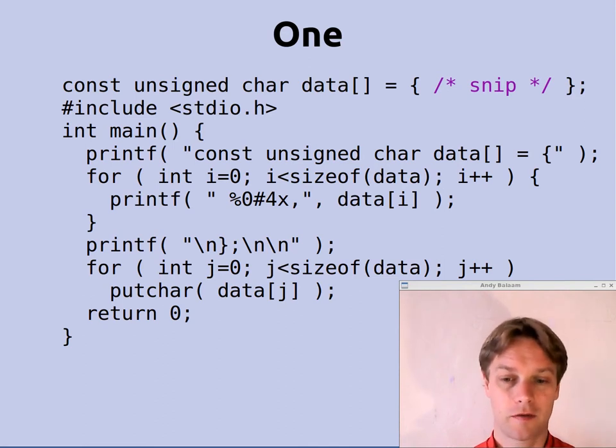So the beginning of this program is a full description of its source code, a full listing in ASCII character codes. And if you look at the main method, the first thing the program does is it prints out const unsigned char data. So it prints out that first bit of itself.